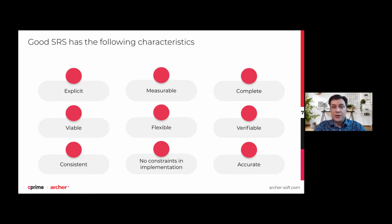There are specific characteristics that every software requirement specification should have. By reviewing this list and comparing it to your SRS, you can ensure it will be a useful document for all stakeholders. The first characteristic is explicit: an SRS document should be easy to understand — nothing should be vague, so there are no misunderstandings between stakeholders.